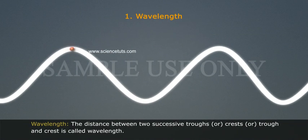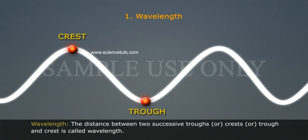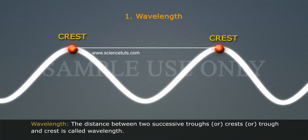The distance between two successive troughs or crests, or trough and crest, is called wavelength.